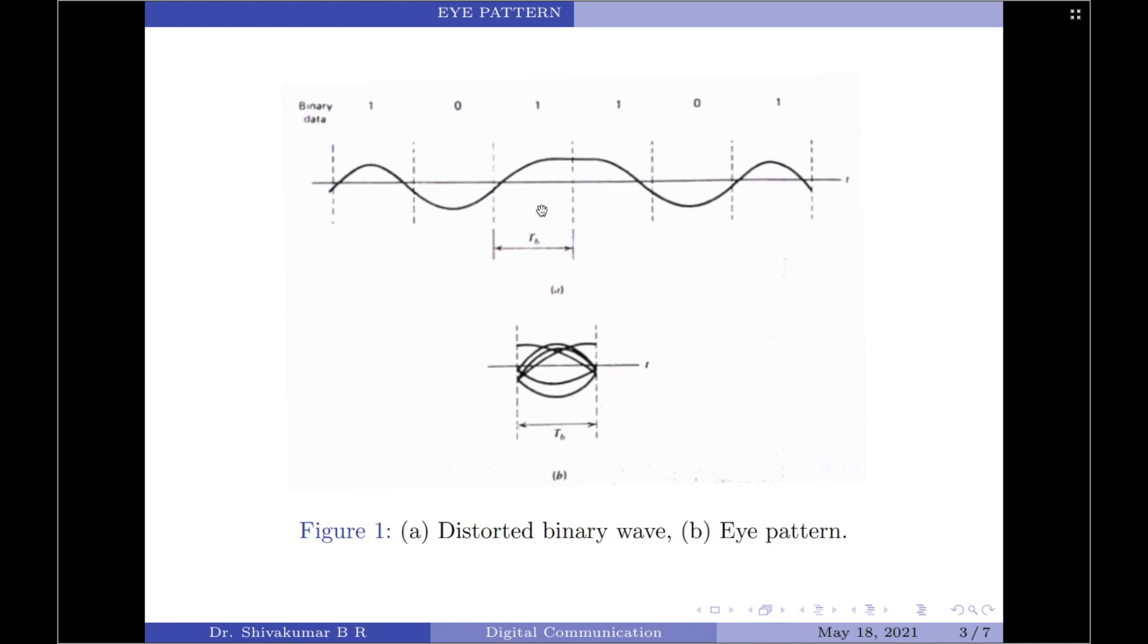When we apply the received signal to the vertical deflection plates and a sawtooth wave at the same transmitted symbol rate to the horizontal deflection plates, the waveforms in successive symbol intervals are translated into one symbol interval.